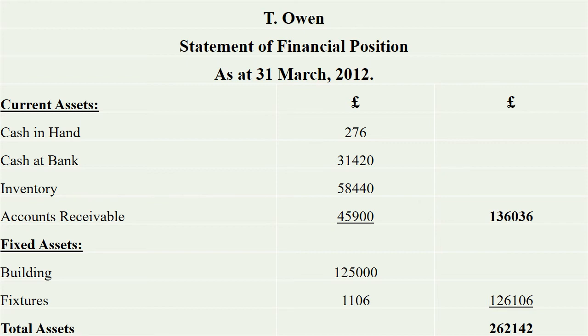Now, when we have fixed assets, we will have total assets. Total assets will be 262,142. In this case, we have liabilities, but because we don't have space, we will go to the next slide.